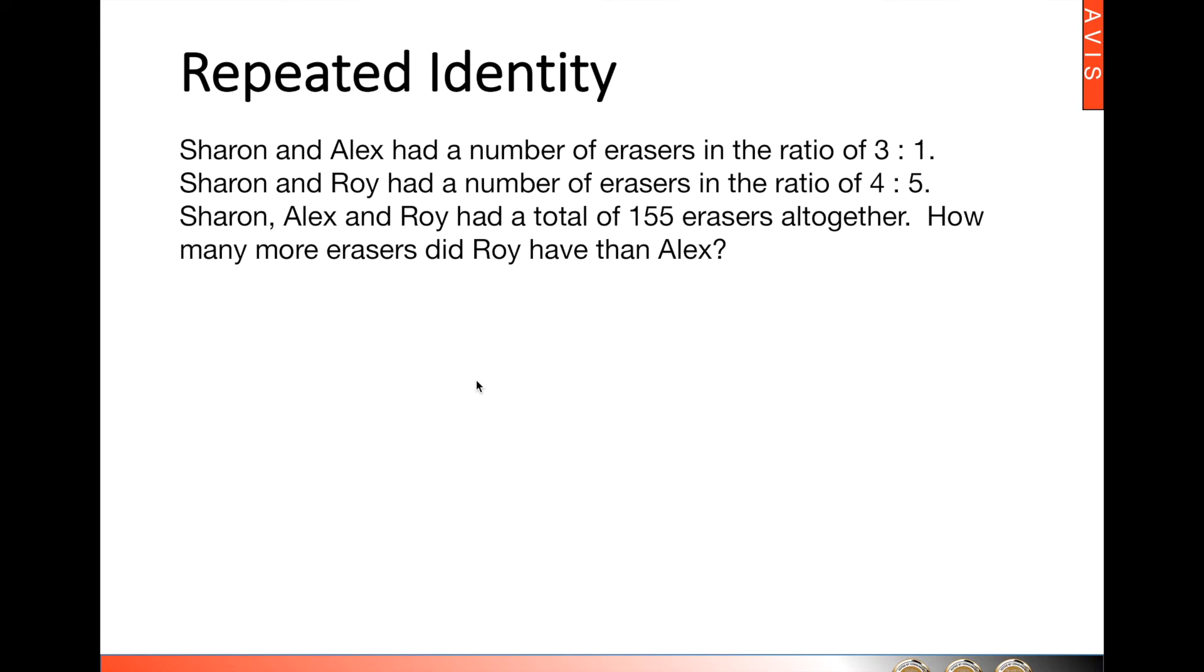So from the question there are three variables: Sharon, Alex and Roy. But we can clearly see that Sharon is the name that is repeated, so Sharon will be our repeated identity in this question.